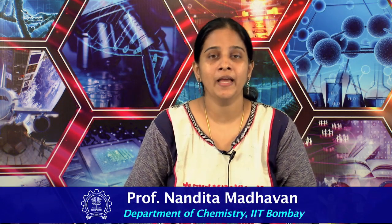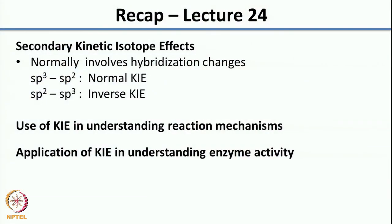Welcome back. In the last class we were looking at secondary kinetic isotope effects. We had seen that secondary kinetic isotope effects are usually associated with change in hybridization. So, sp3 to sp2 leads to normal kinetic isotope effect whereas sp2 to sp3 leads to inverse kinetic isotope effect. We had also seen the use of kinetic isotope effects in understanding reaction mechanisms and enzyme activity.